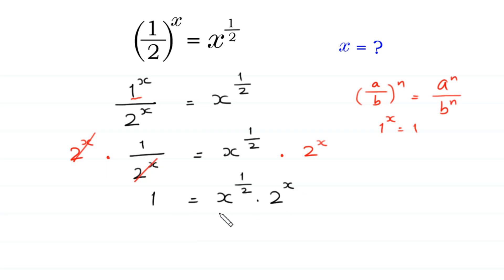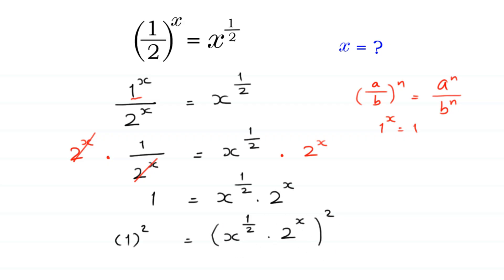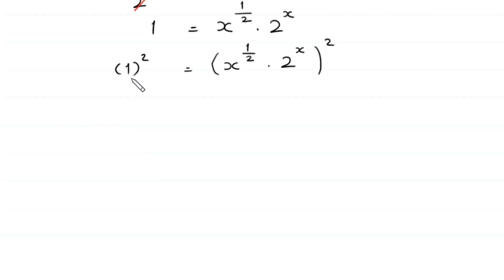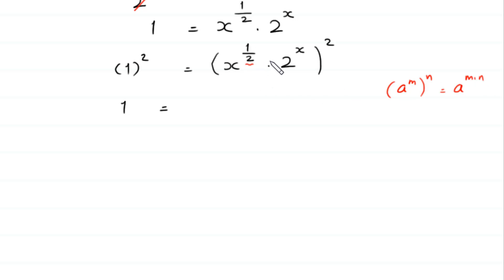Now we take a square of both sides. 1 squared is equal to x to the power 1 over 2 times 2 to the power x, whole squared. According to the property a to the power m, whole to the power n equals a to the power m times n, we multiply the power 1 over 2 by 2, and multiply the power x by 2.